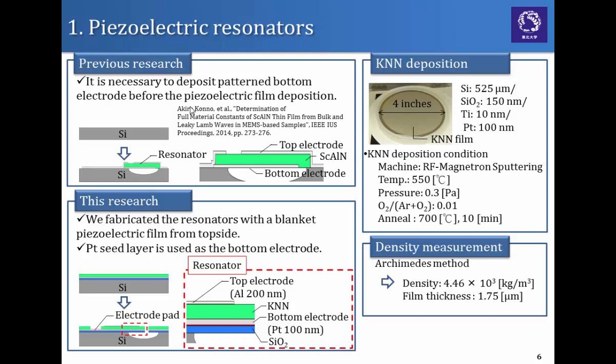And this is the KNN deposition conditions. We deposited the KNN blanket film on the 4-inch wafer which consists of silicon, silicon dioxide, titanium, and platinum. And this is the deposition conditions. After the deposition, we measured its density by using the Archimedes method. And this is the result of the density and the film thickness.